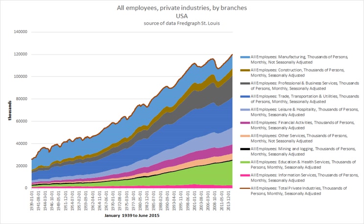Usually, either an employee or employer may end the relationship at any time, often subject to a certain notice period. This is referred to as at-will employment. The contract between the two parties specifies the responsibilities of each when ending the relationship and may include requirements such as notice periods, severance pay, and security measures. In some professions — notably teaching, civil servants, university professors, and some orchestra jobs — some employees may have tenure, which means they cannot be dismissed at will. Another type of termination is a layoff.